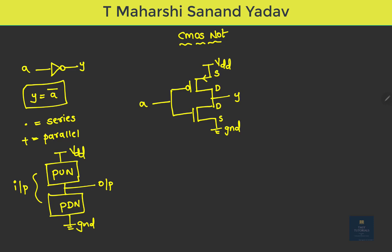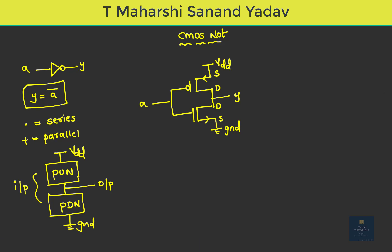For PMOS, the arrow mark points in a specific direction, and for NMOS, the arrow points in the opposite direction. To understand how to place the arrow marks for PMOS and NMOS, check the previous videos where this is clearly explained.